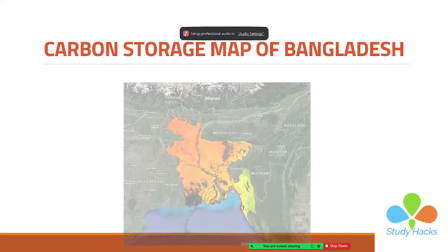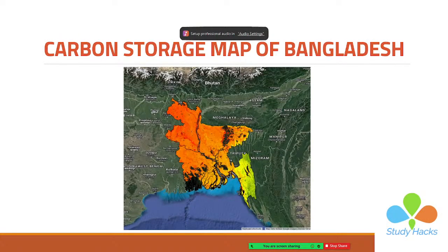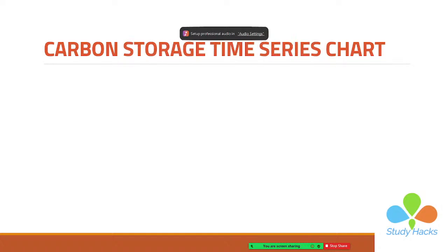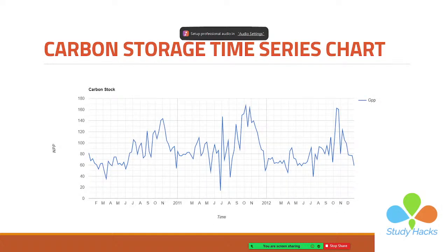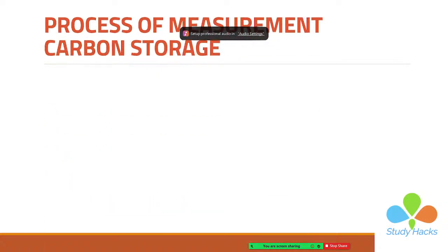Here you can see this is the carbon storage map of Bangladesh, and I will create this map in Google Earth Engine platform for a specific period of time. This is another time series chart of carbon storage for a specific time period. We will try to cover all of the things one by one. First of all, let's look at the process for measuring carbon storage in Google Earth Engine and what algorithm is used.